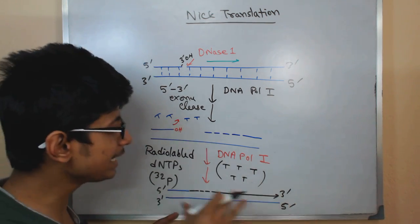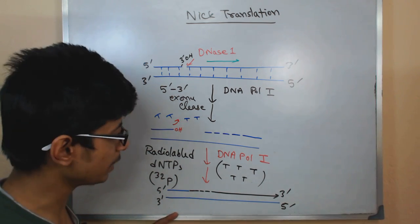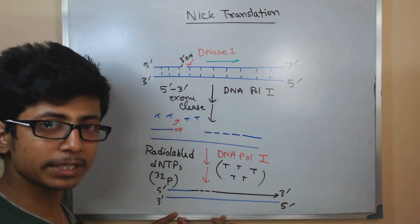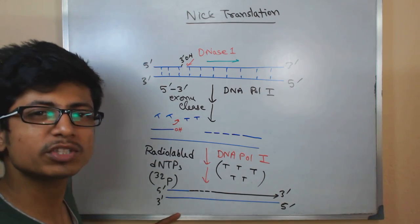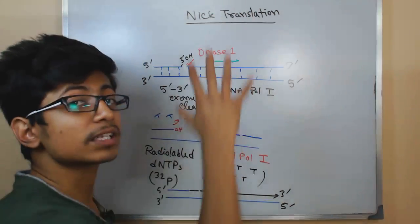So as a result, in the future, we can easily find this DNA or track this DNA inside the cell during different experiments, simply watching it due to this radiogram generation. So this is called the nick translation process.